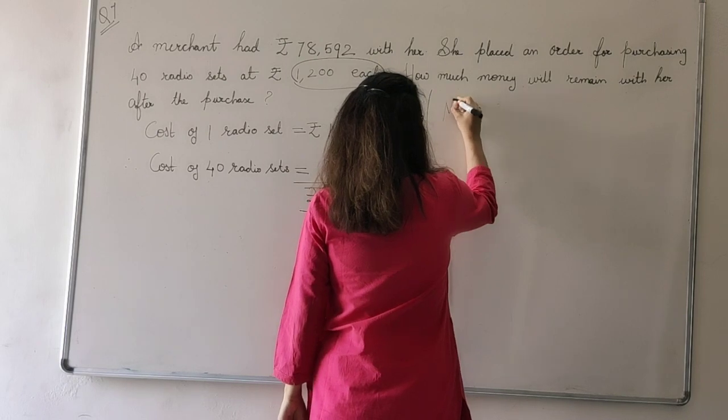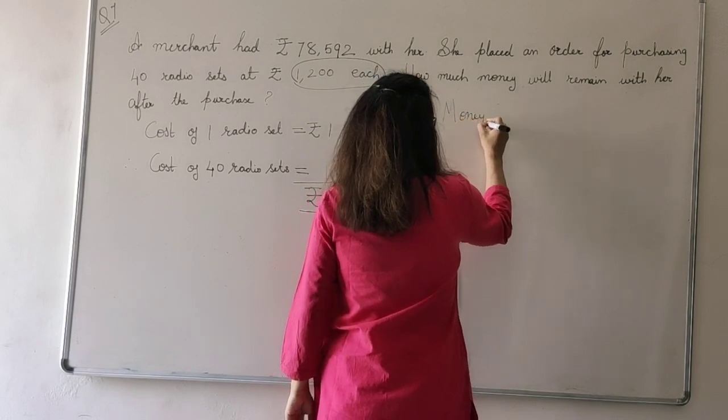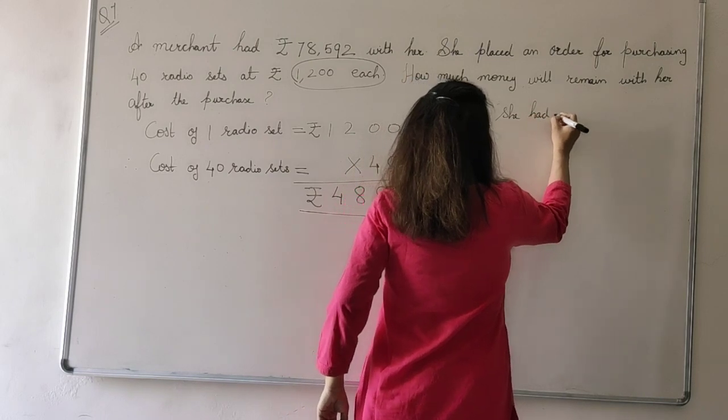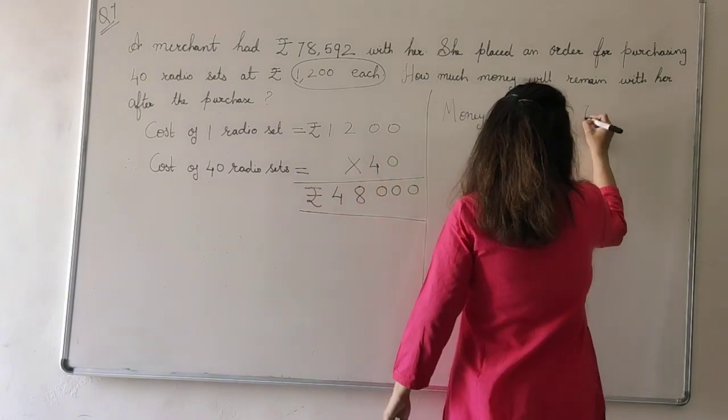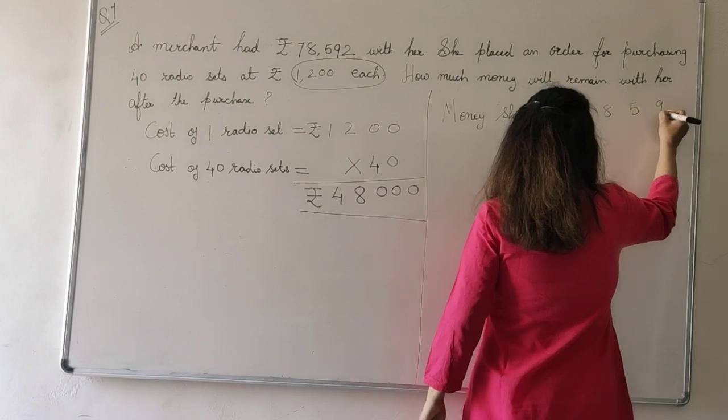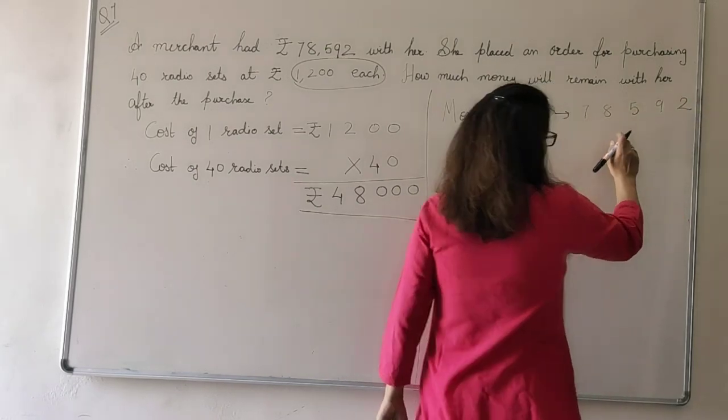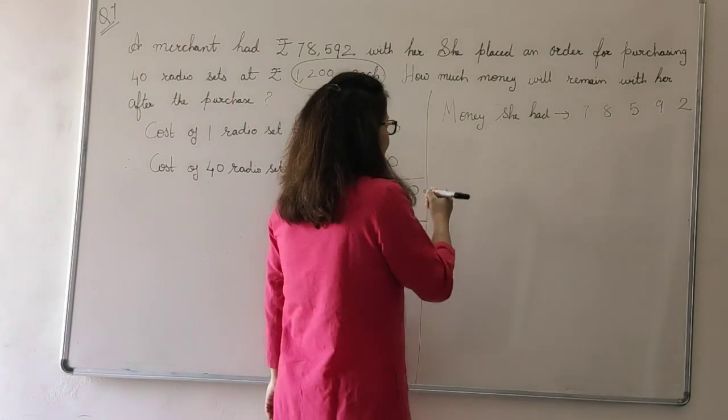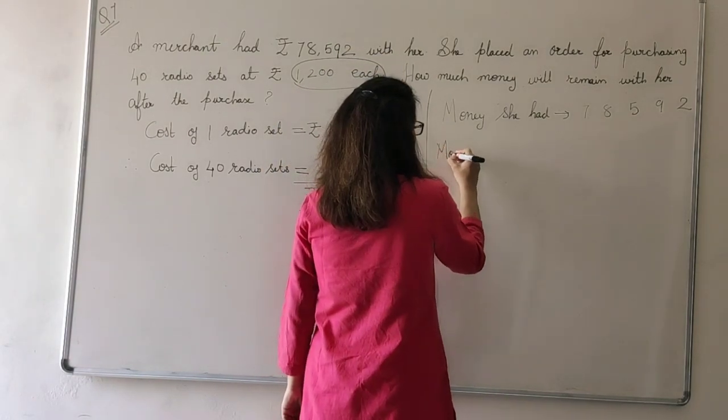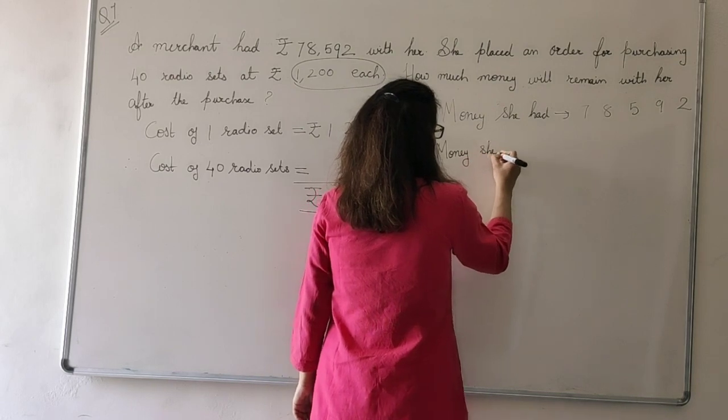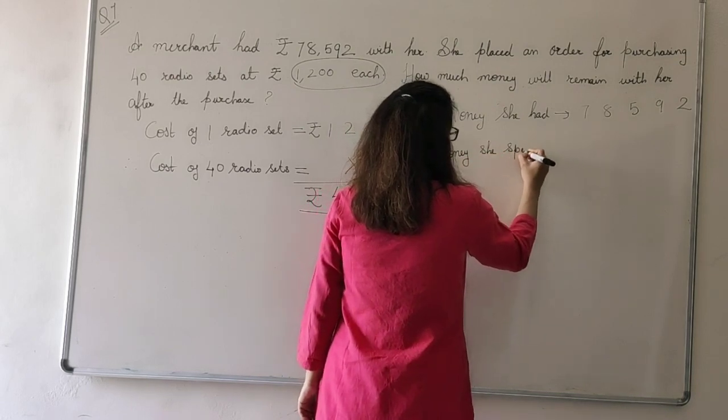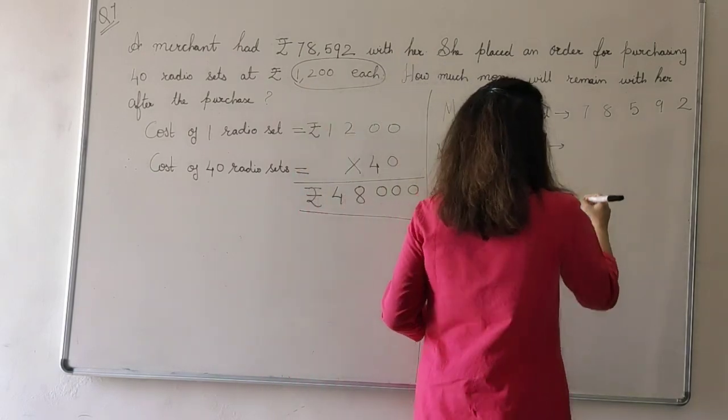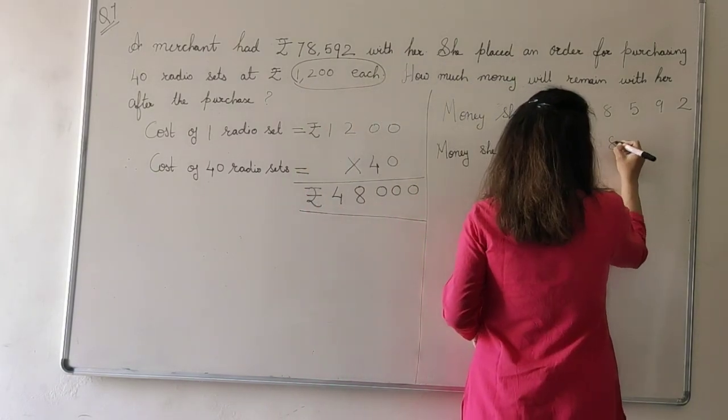78,592. We will do the subtraction here only. So keep some gap between the digits. Money she spent. How much money did she spend? 48,000. So, 48,000.